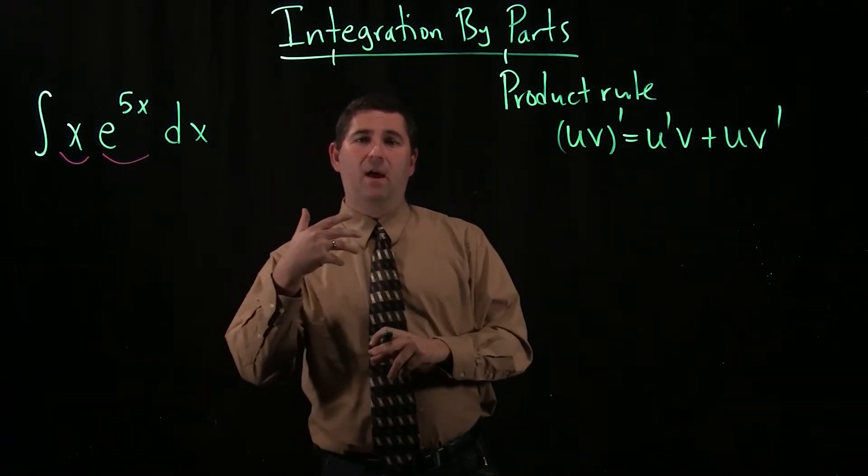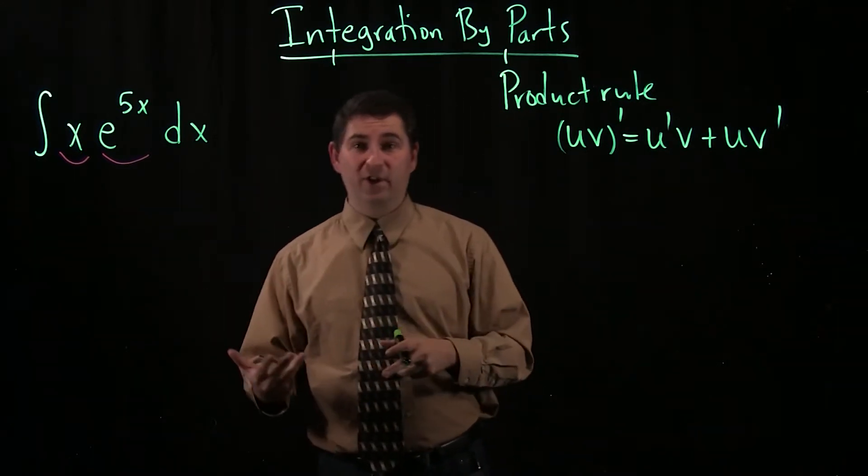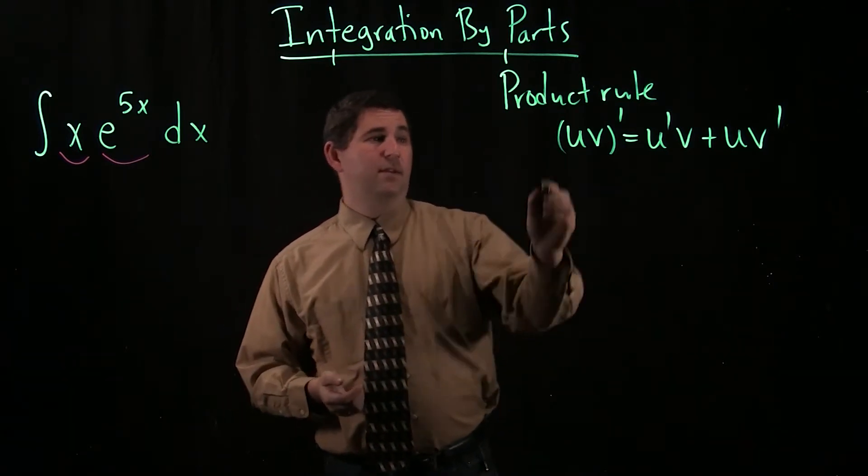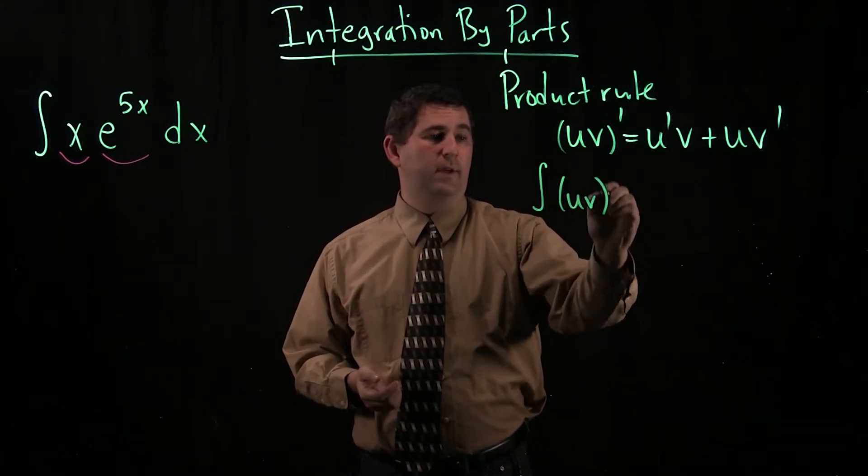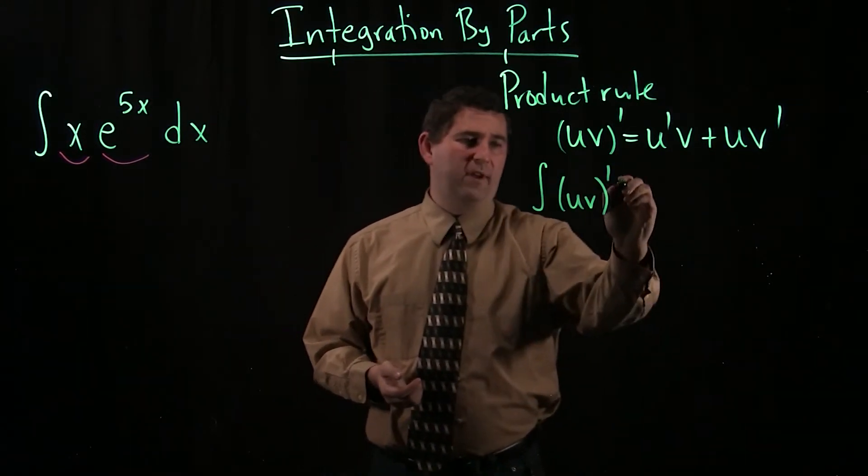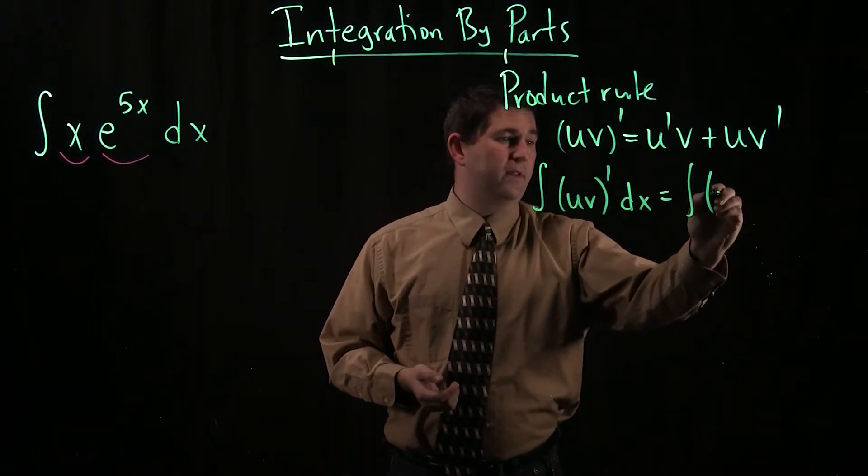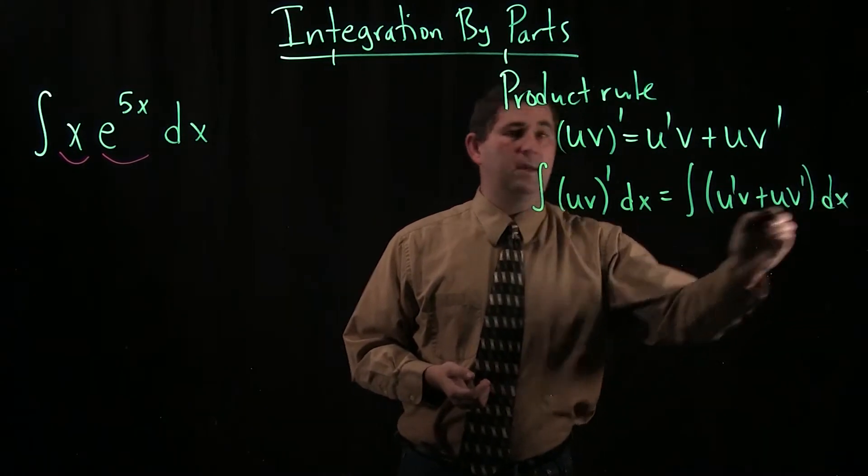If I want to take a rule for differentiation and turn it into a rule for antidifferentiation, well, it makes sense that I should take an antiderivative. So let's do that. I'll take an antiderivative of u v prime. And, of course, I have to have a dx over here. And then I have an antiderivative of this sum, u prime v plus u v prime dx.